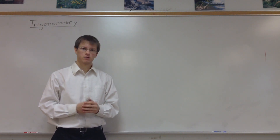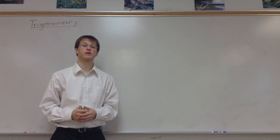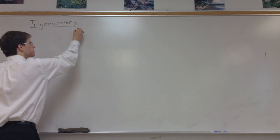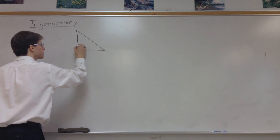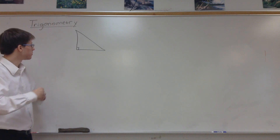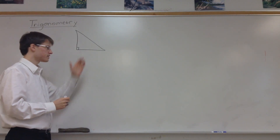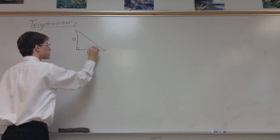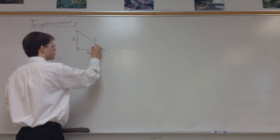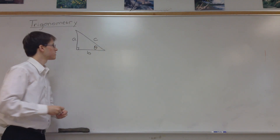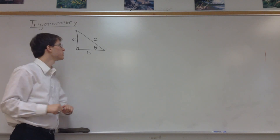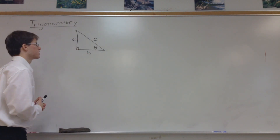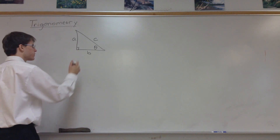A primer on right triangle trigonometry is very important and useful, so let's get started. A right triangle is any triangle that has a 90-degree angle, usually indicated by a little box in the corner where the right angle is. We label the sides a, b, and c, and we have an angle which we call theta — that swirly symbol with a line through it. We generally use Greek letters to label angles.